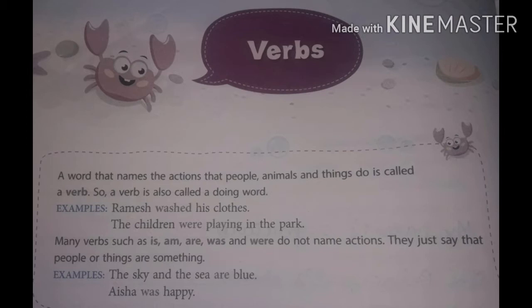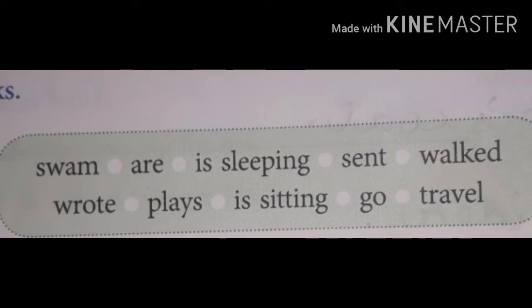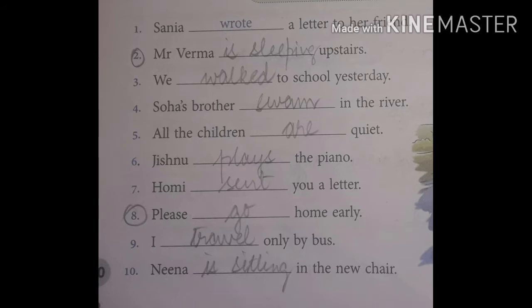Now let us do the exercise given on page number 30. A: Fill in the blanks. The words given are: swamp, are, is sleeping, sent, walked, wrote, place, is sitting, go, travel. Students, pause the video and attempt the exercise given on page number 30. After you complete, check the answers with me. The first one is already done for you.